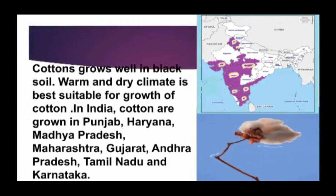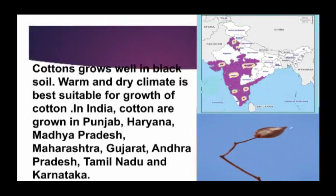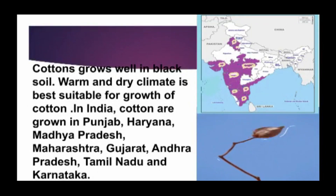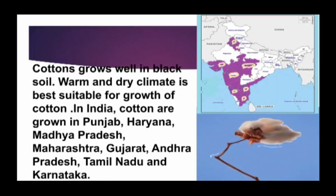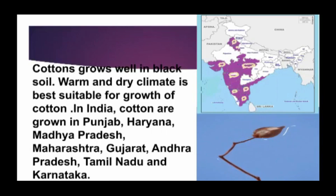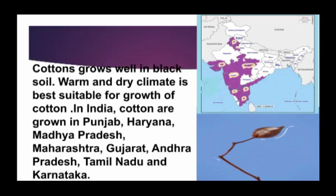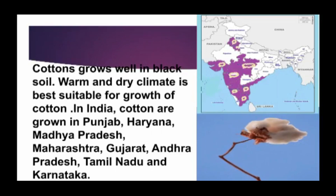Cotton grows well in black soil. A warm and dry climate is best suitable for the growth of cotton. In India, cotton is grown in Punjab, Haryana, Madhya Pradesh, Maharashtra, Gujarat, Andhra Pradesh, Tamil Nadu, and Karnataka.